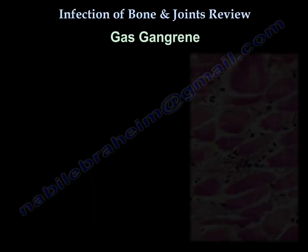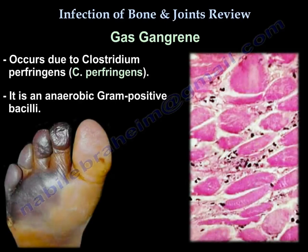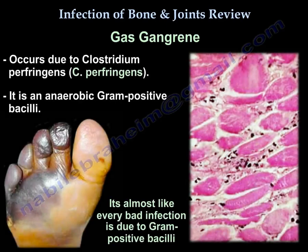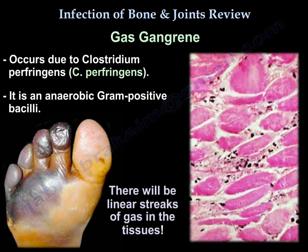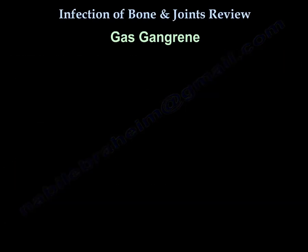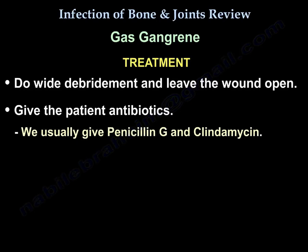Gas gangrene occurs from Clostridium perfringens, an anaerobic gram-positive bacilli. There will be linear streaks of gas in the tissues. Treatment is wide debridement, leaving the wound open, plus antibiotics — usually penicillin G and clindamycin.